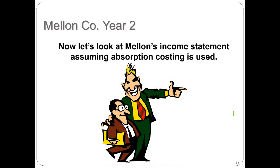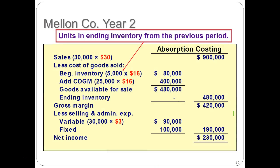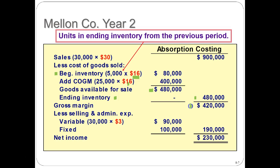Now let's look at Mellon's income statement assuming absorption costing is used. Sales are 30,000 times $30, giving $900,000. Less cost of goods sold: we had beginning inventory of 5,000 times $16 — that larger number which includes the fixed overhead — giving $80,000. Add cost of goods manufactured: 25,000 times $16 gives $400,000. The $80,000 plus $400,000 gives $480,000, and we have no ending inventory. So cost of goods sold is $480,000. Gross profit is $900,000 minus $480,000 equals $420,000.